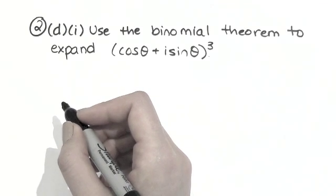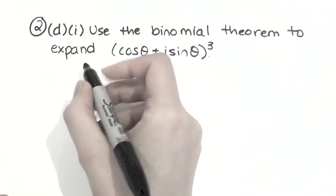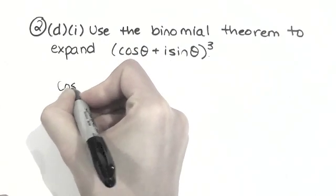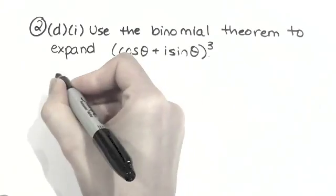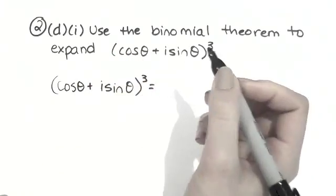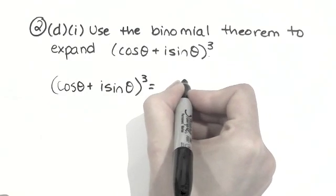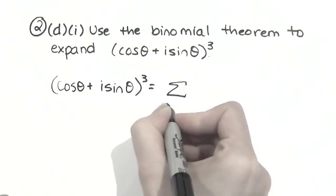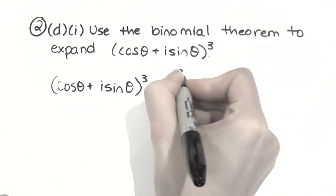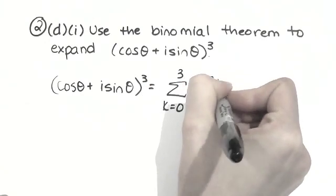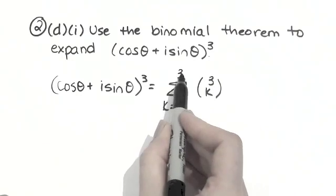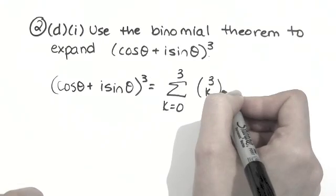So what we have is cos theta plus i sine theta cubed equals the sum from k equals 0 up to 3, because it's cubed. And here is our binomial theorem, with 3 choose k, so again we use 3 as our largest k value.